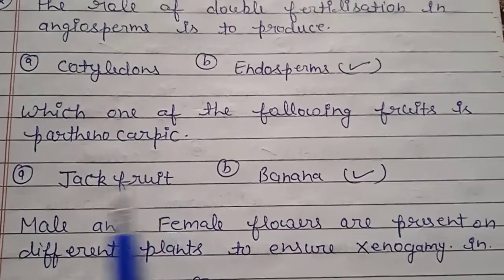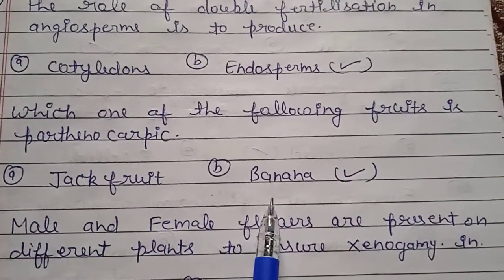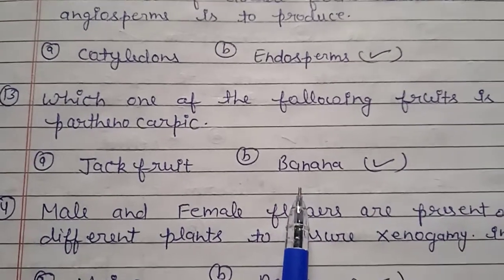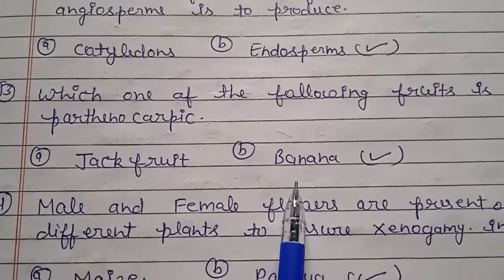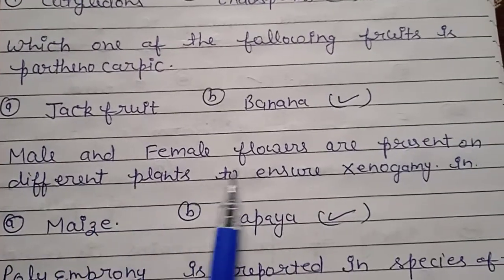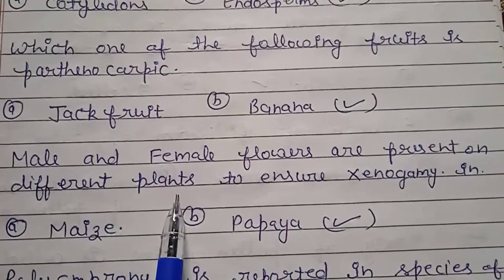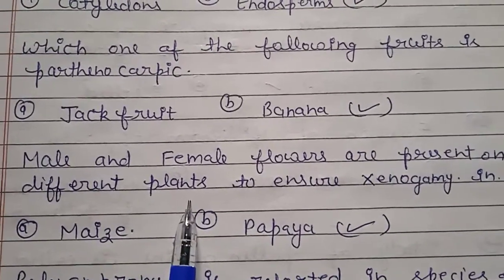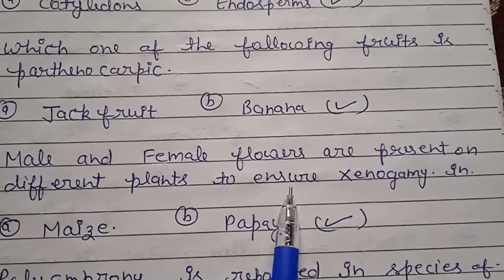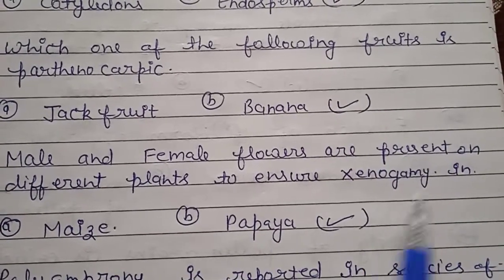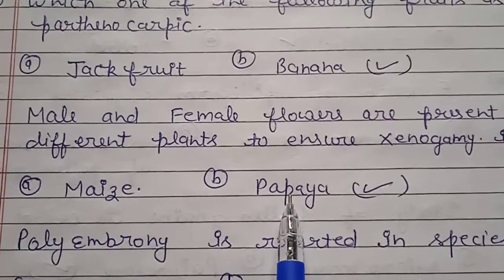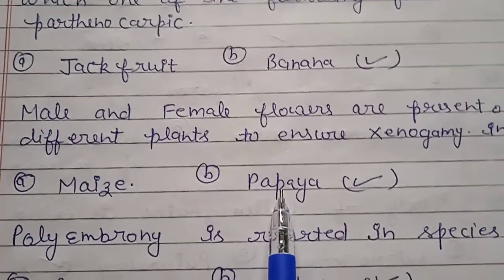Question number 13: which one of the following fruits is parthenocarpic? Question number 14: when male and female flowers are present on different plants, which plant ensures xenogamy? The right answer is papaya.